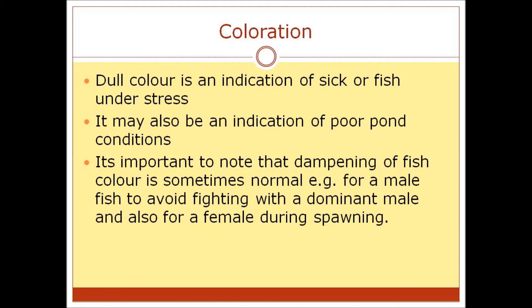Regarding coloration, dull color is an indication of a sick fish or a fish under stress, and may also indicate poor pond conditions. It is important to note that dampening of fish color is sometimes normal — for example, for a male fish to avoid fighting with a dominant male, and also for a female during spawning.